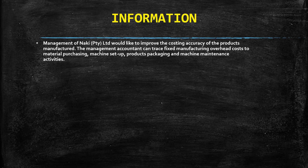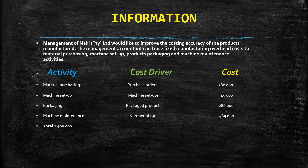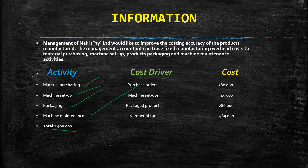Management of Naki Pty Ltd would like to improve the costing accuracy of the products manufactured. The management accountant can trace fixed manufacturing overhead costs to: material purchasing, machine setup, packaging, and machine maintenance. When it comes to activity-based costing, there are two steps: the first step is to identify the activity and its cost driver; the second step is to allocate those costs to a particular product. The management accountant has already done this work for us, and the total cost across all activities is 1.4 million.